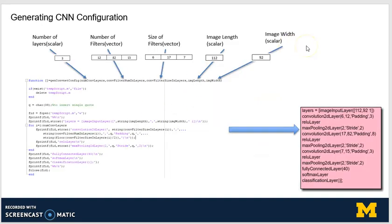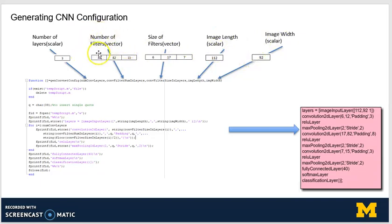The first activity in my project was creating a script capable of generating a CNN configuration. As you can see here, the script is called GenConnetConfig. It takes as input the number of convolutional layers, which is three in this case, the number of filters in different layers, the size of filters in different layers, and the image length and width. The number of filters is a vector, and the size of filters is also a vector, each with three elements corresponding to three different layers. When these are passed to this script, it generates the configuration as shown.